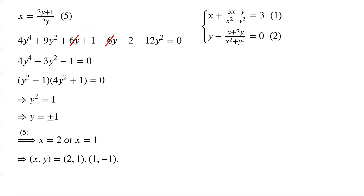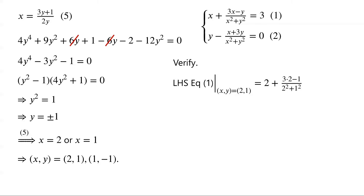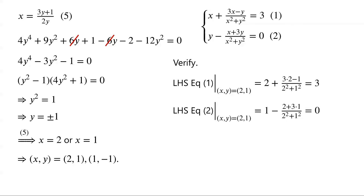So the solution pairs (x, y) are (2, 1) or (1, negative 1). We verify whether these are solutions of the original system. When (x, y) = (2, 1), the left-hand side of equation 1 equals 2 plus (3·2 minus 1)/(2 squared plus 1 squared), which equals the right-hand side. And the left-hand side of equation 2 equals 1 minus (2 plus 3·1)/(2 squared plus 1 squared), which also equals the right-hand side.